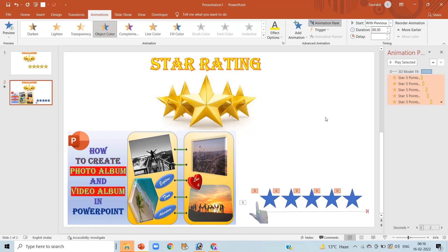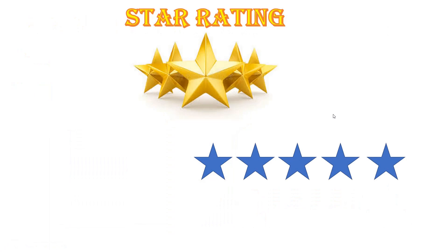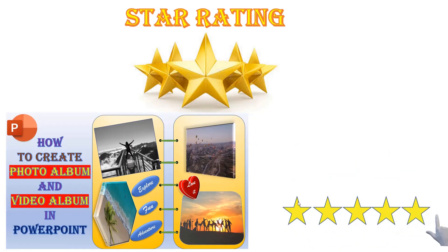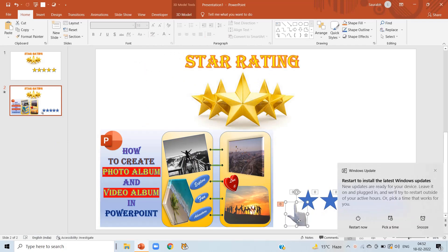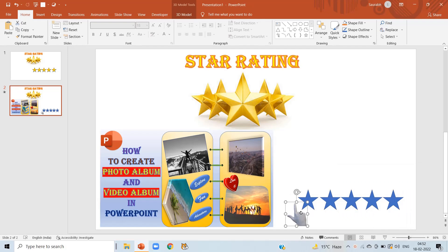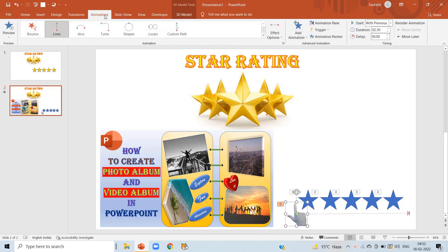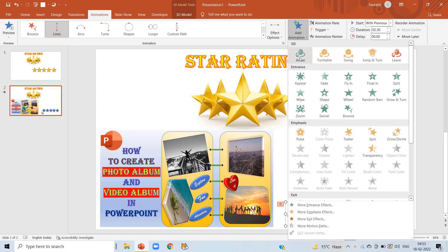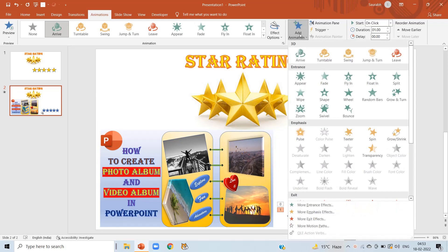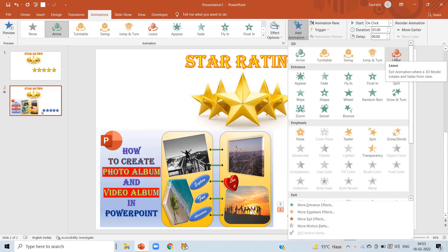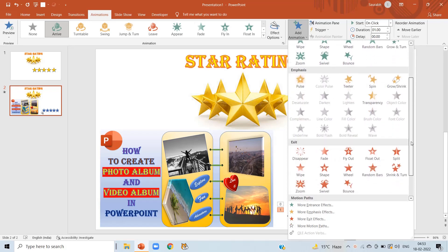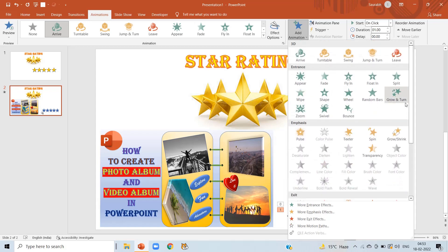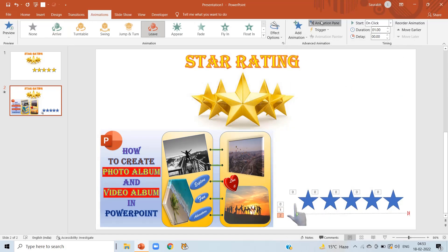The stars will turn yellow one by one because of the staggered delay. For the hand's appearance and disappearance, click the hand, go to Animation, Add Animation, and give it an entrance animation — for a 3D model, 'Arrive.' Then click Add Animation again and give it an exit animation — 'Leave.' You can use any entrance or exit animation you prefer.